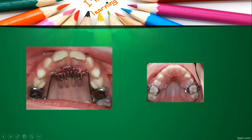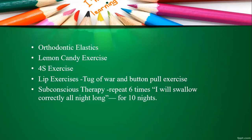Give exercises to train the tongue to a normal position. Exercises using orthodontic elastics can be given. Lemon candy exercises — the same as the sugarless drop exercises — ask the patient to keep the candy on the palatal area, squeeze it, salivate, and swallow. The 4S exercises are: Spot (give an appropriate spot for correct tongue positioning), Squeeze (squeeze that place), Salivate, and Swallow — this teaches the patient to properly position the tongue.